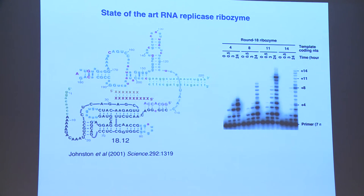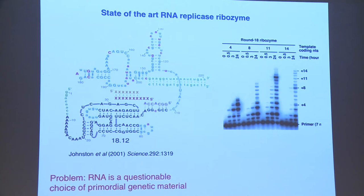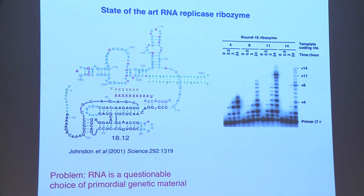For the third part of the talk, I'd like to get back to the RNA replicase. Another thing that always bothered me about the RNA world hypothesis: RNA is perfectly okay in the lab in a clean Eppendorf tube, but it's a rather fragile molecule. It falls to bits very rapidly at high pH, at high temperatures, or in the presence of high concentrations of metal ions. So RNA is a questionable, if not downright perverse choice of primordial genetic material, because clearly the surface of the early Earth wouldn't have been such a benign place.